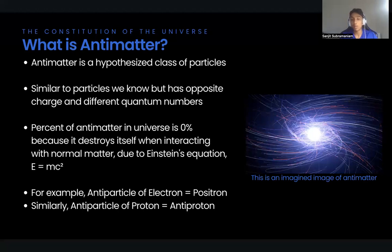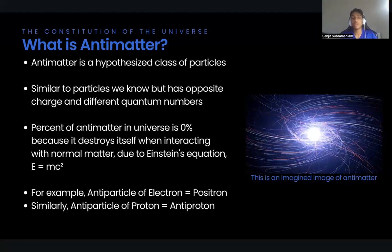Similarly, the antiparticle of a proton — a positively charged subatomic particle — is called an antiproton, which has the same mass as a proton but carries a negative charge. When a particle and its corresponding antiparticle come into contact, they annihilate each other, releasing a tremendous amount of energy in the process. This annihilation converts their mass into energy, according to Einstein's famous E=mc² equation.